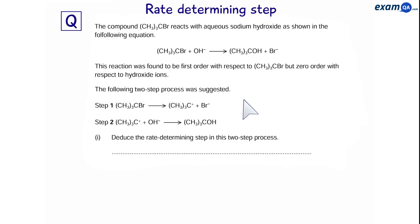Here's another question. Again, if you want, you can pause the video. So, we've been given the reaction above and we have the two step mechanism. It told us that the reaction is zero order with respect to hydroxide ions. So, which one is the rate determining step?